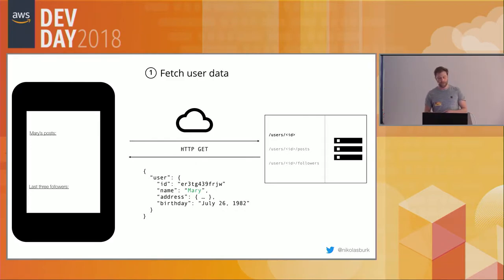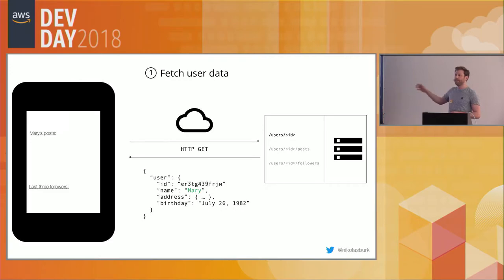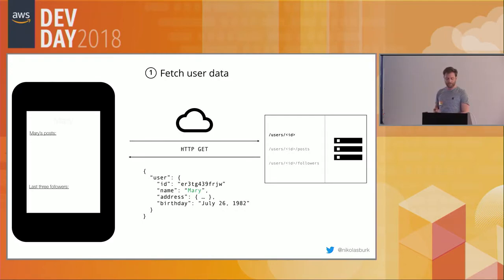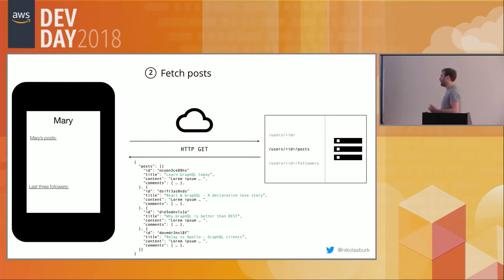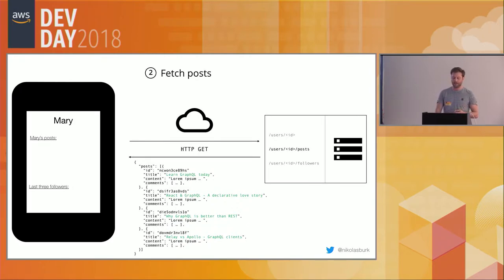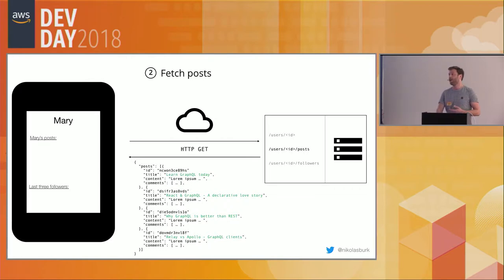To implement that profile screen, you'd make three different requests. Hitting the users/id endpoint returns JSON with the id, name, address, and birthday - but we only need the first name, so we're downloading unnecessary data. Then the users/id/posts endpoint might return extra data like post content or comments, again downloading more than needed, slowing down performance and putting weight on the user's data plan.